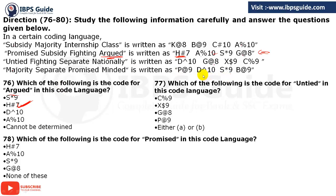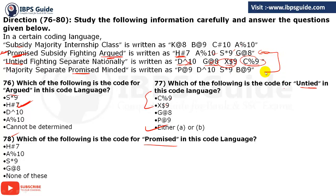Q77: Find the code for 'United'. United appears only in the first sentence. Codes used only in that sentence could be X dollar 9 or C percentage 9. Both are possible answers, so the answer is either A or B. Q78: Find the code for 'promised'. Promised appears in the second and fourth sentences. The code common to both sentences is S star 9. That is option C.